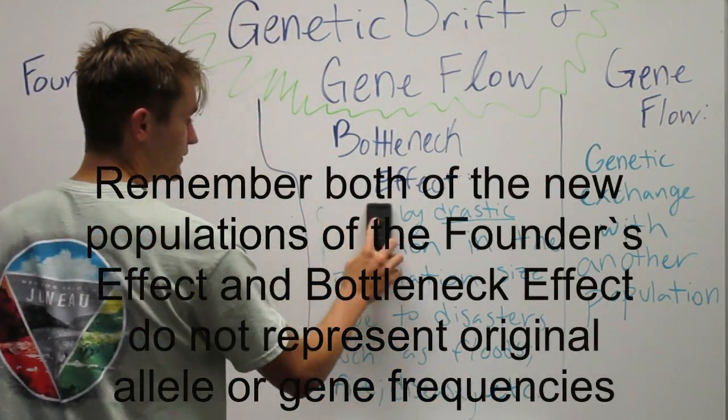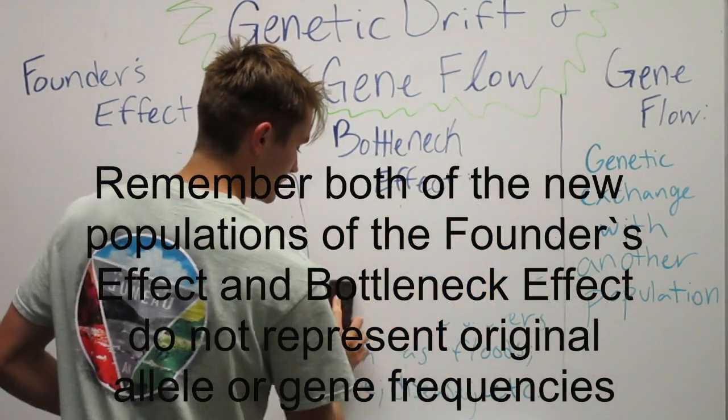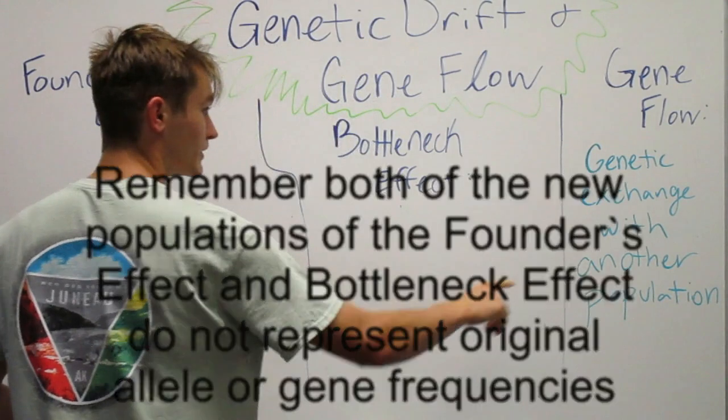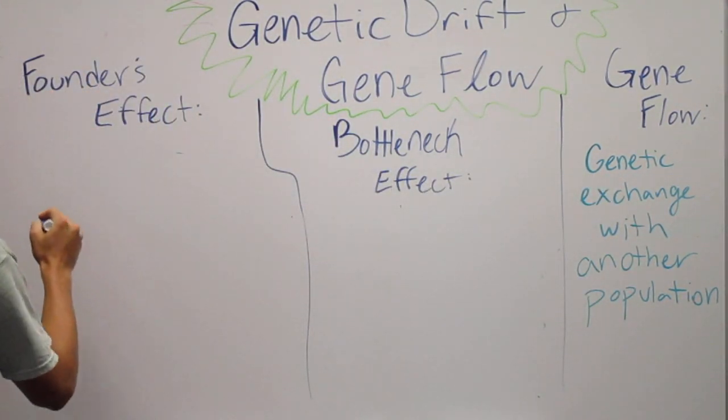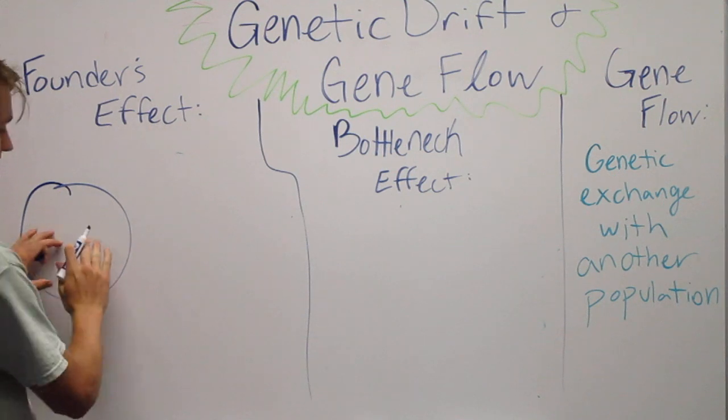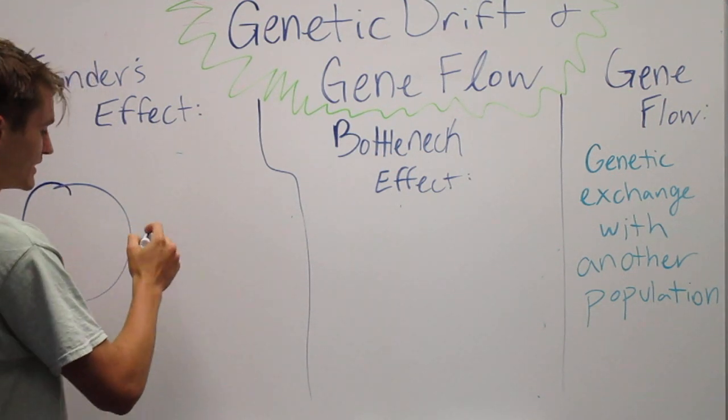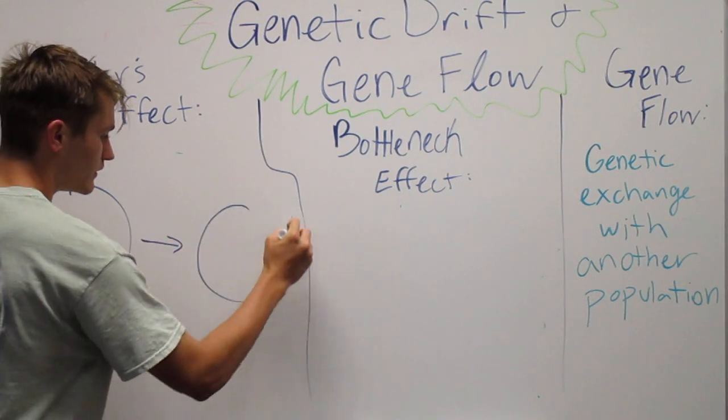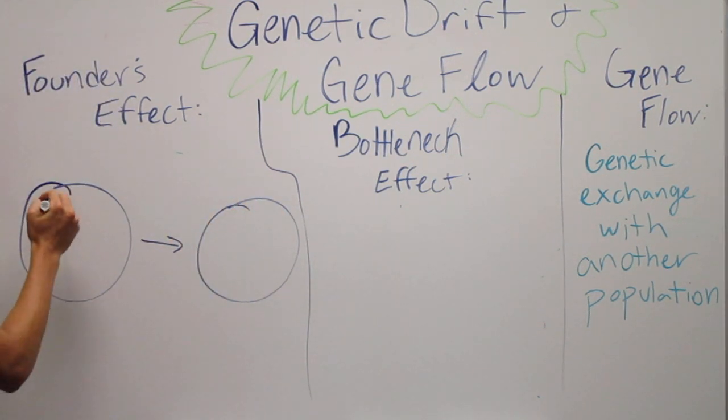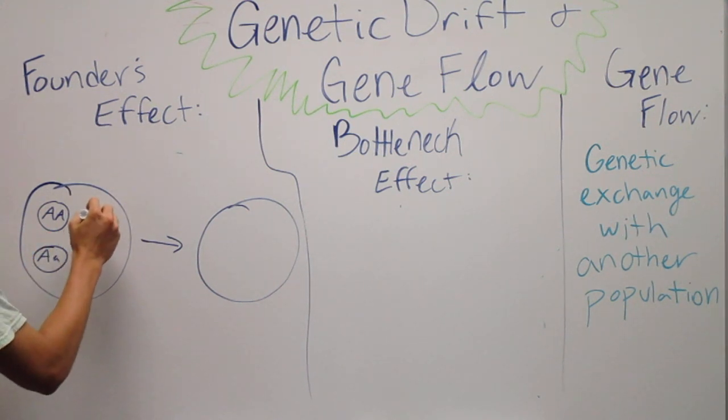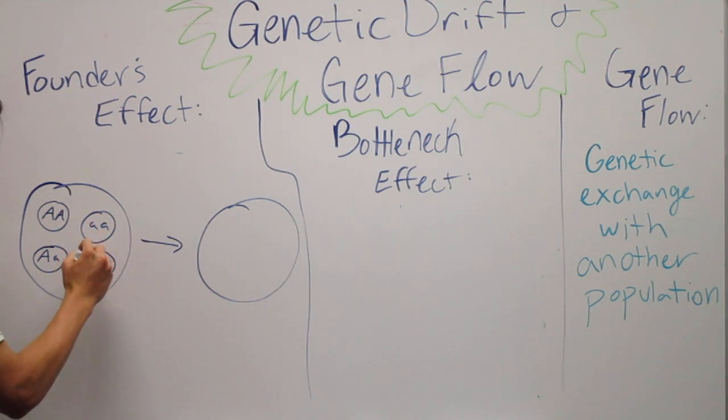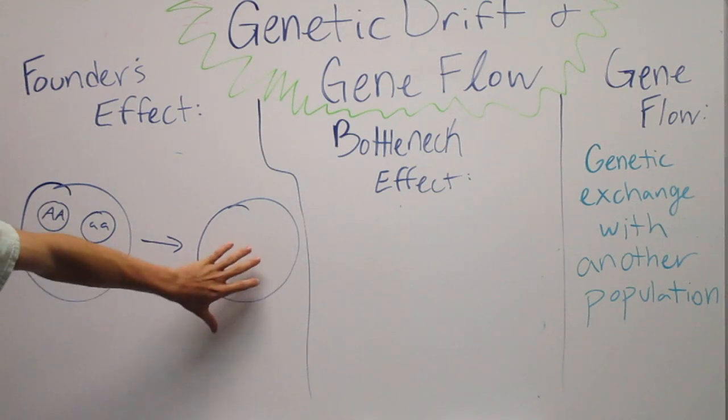Let's say for the founder's effect, this is a certain ecology, a certain environment, a new area. So in this area you have some homozygous dominant traits, and then you have over here some heterozygous, some homozygous recessive, and then a homozygous recessive. Let's say these are turtles and they're in one pond.